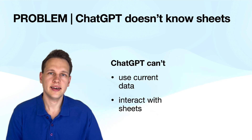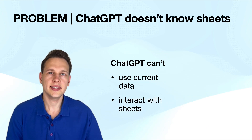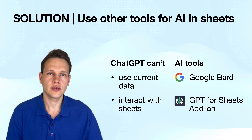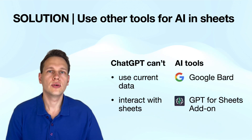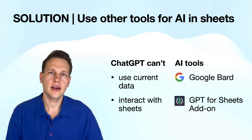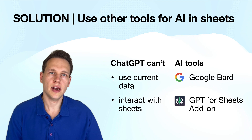ChatGPT is great at answering individual prompts, but it has no access to current data and cannot directly interact with spreadsheets. The solution is to use other AI tools. To create tables or spreadsheets with current data, just use Google Bard. And to interact on a spreadsheet with GPT, just use a plugin like GPT4Sheets.